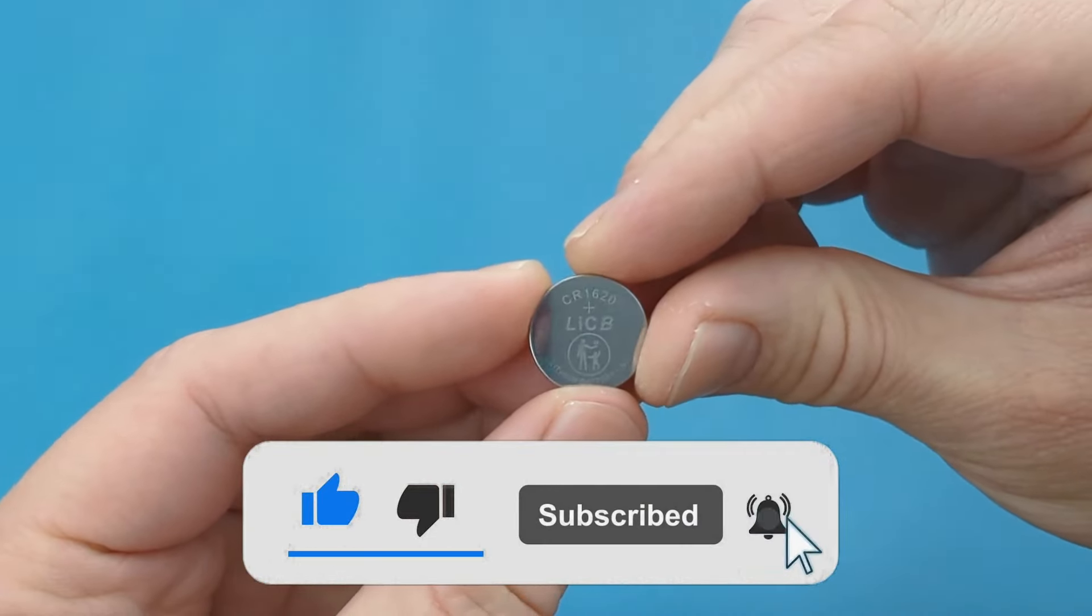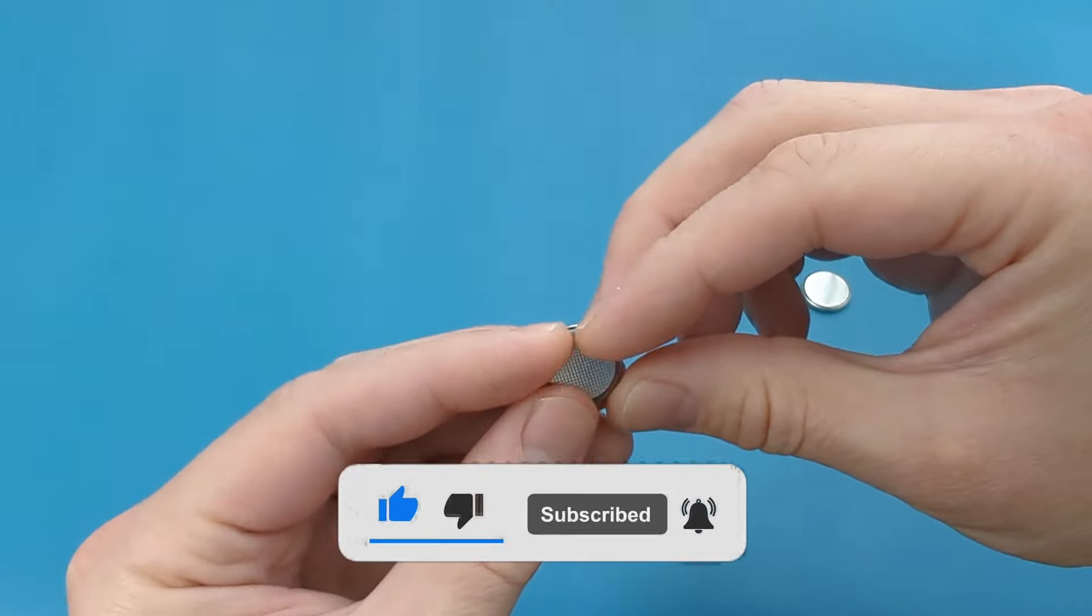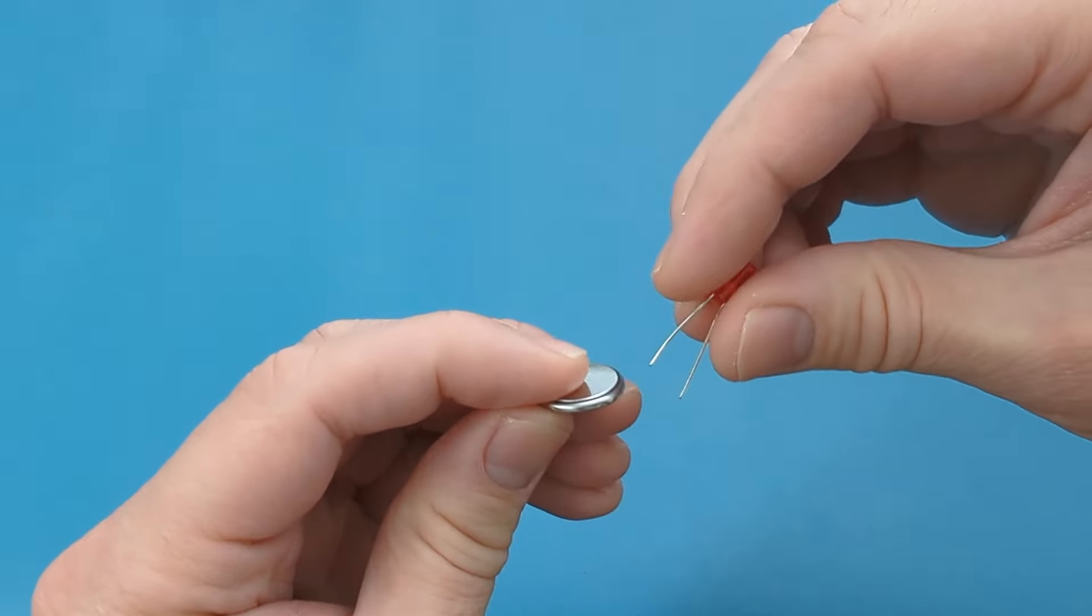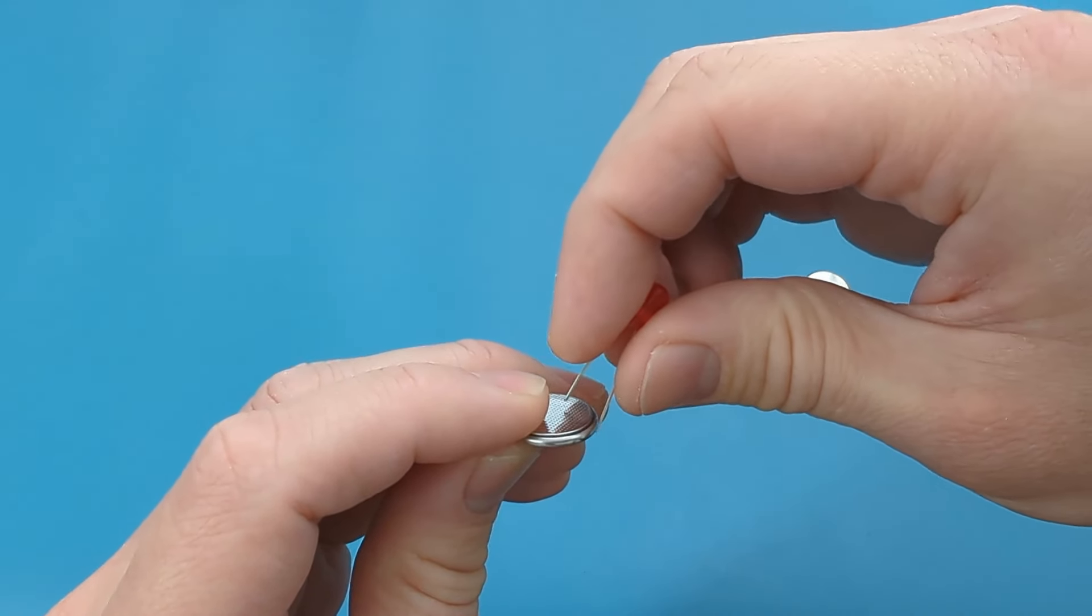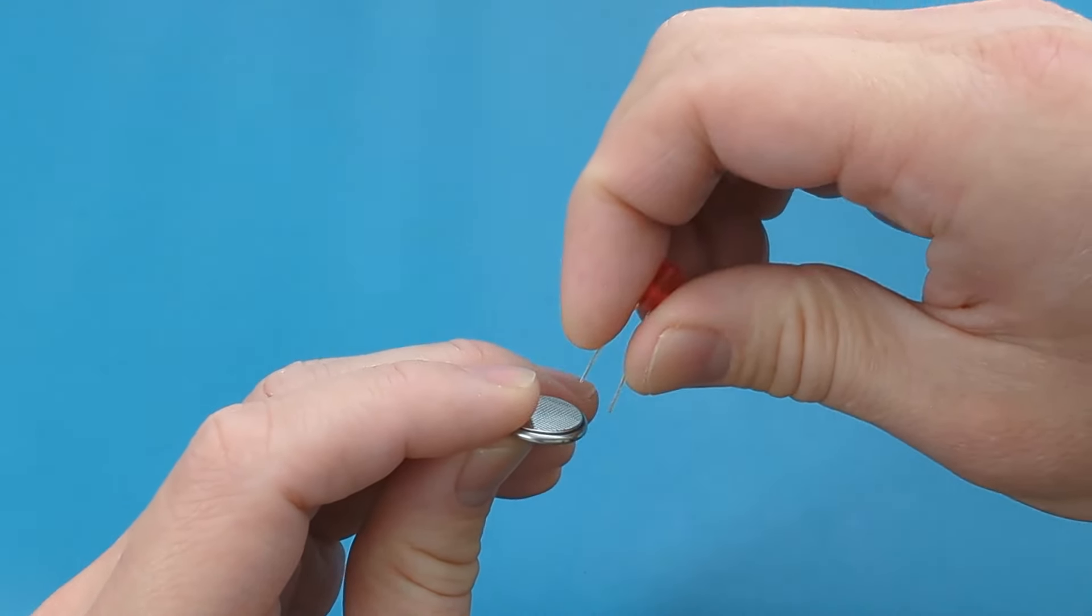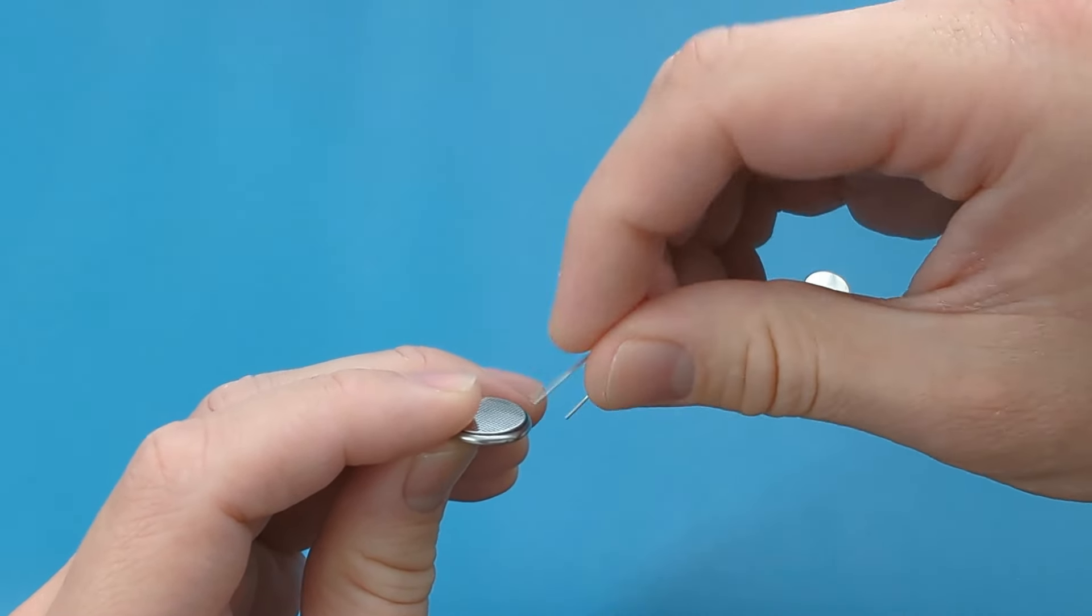Hold the battery on the side with the flat, smooth side on the bottom. Touch the cathode of the LED on the flat, smooth side of the battery. Touch the anode on the side of the battery. As you can see, the LED lights up, which means the battery is still good.